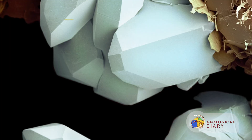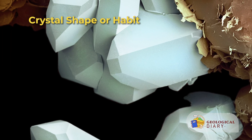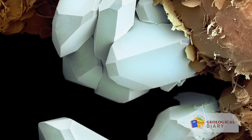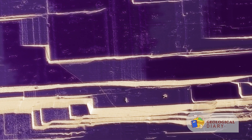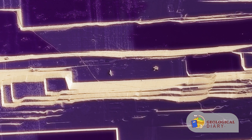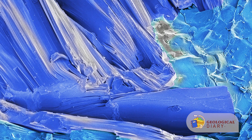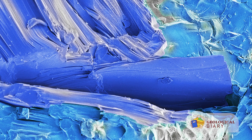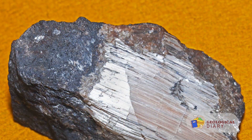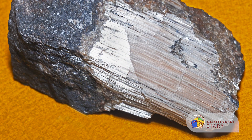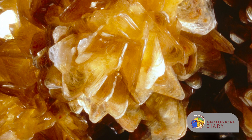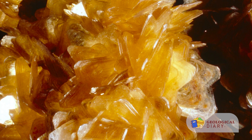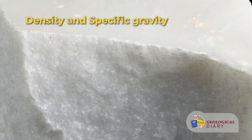A property we can appreciate on a hand sample with our naked eye is the crystal shape or habit — the common or characteristic shape of a crystal or aggregate of crystals. Minerals exhibit somewhat regular polygons that are helpful in their identification. Some minerals tend to grow equally in all three dimensions, whereas others tend to be elongated in one direction or flattened if growth in one dimension is suppressed. Terms commonly used to describe crystal habits include equidimensional, bladed, fibrous, tubular, prismatic, platy, and blocky.